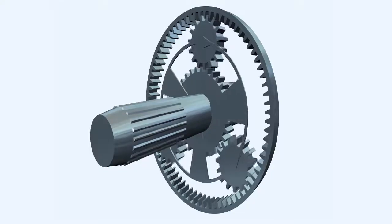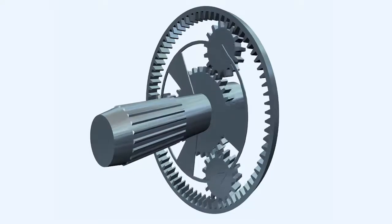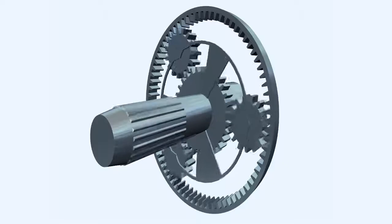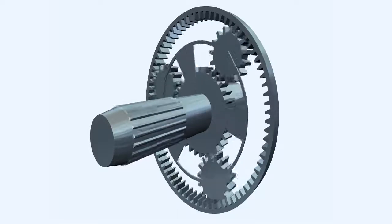The epicyclic reduction gear layout is quite compact and has the advantage of being a concentric layout. All of the gears rotate about the same centerline.